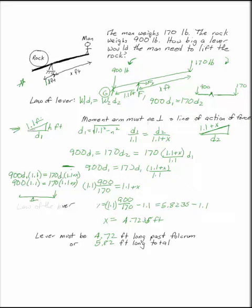This is why the law of the lever is so valuable, because while you have to calculate the moment arm perpendicular to the line of action of the force, the law of the lever allows you to ignore this angle here at this triangle and just say 900 times 1.1 equals 170 times 1.1 plus x. This is the law of the lever.